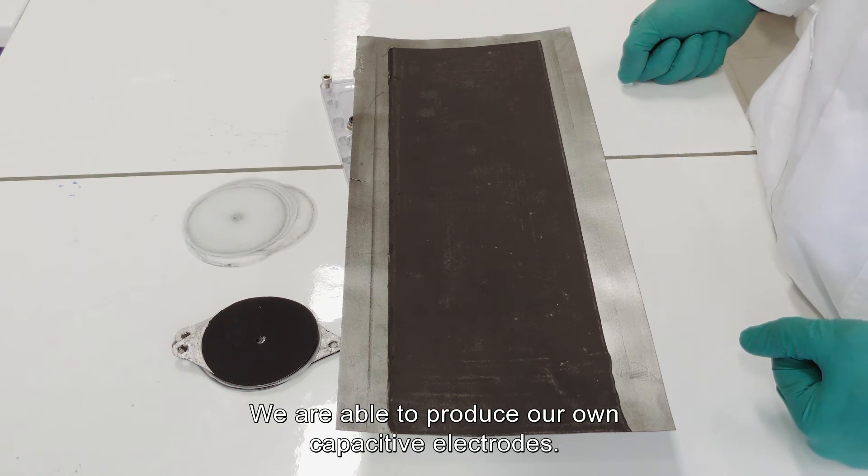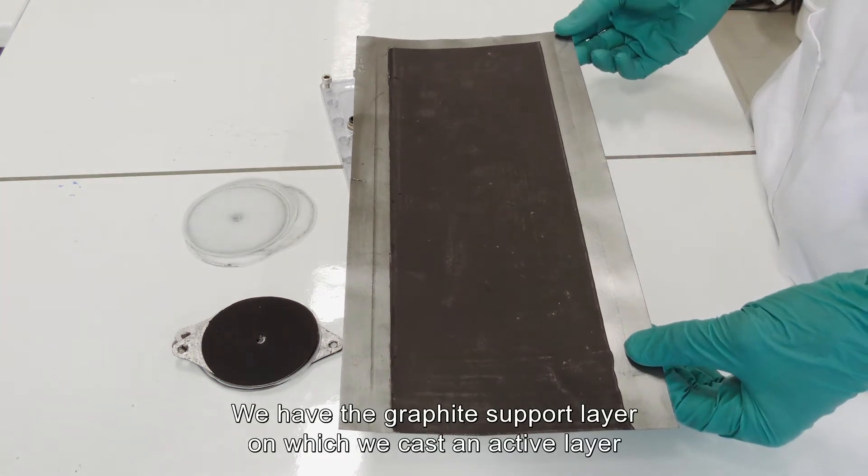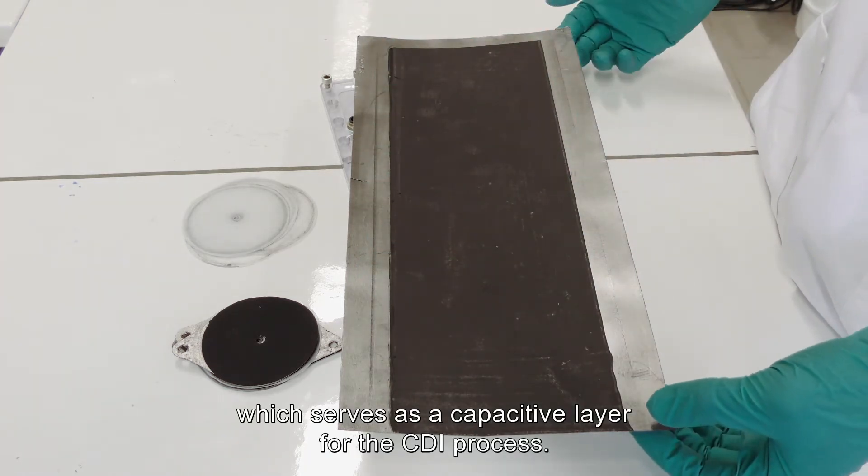We're able to produce our own capacitive electrodes. We have the graphite support layer on which we cast an active layer which serves as a capacitive layer for the CDI process.